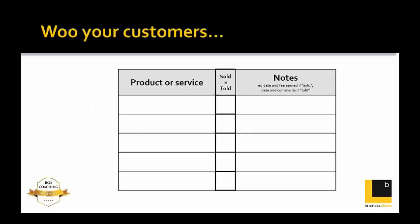An example of a system is a simple checklist — one sheet per customer listing the top five products you think they might be interested in, with notes. Your salesperson or business owner keeps that sheet in the client file. Whenever they're in touch — ringing or visiting — they pull it out and check whether they need to tell the customer about product A again, or move on to product B. Keep it moving; it doesn't need a lot of time, but it does need persistence. That's WOO — Windows of Opportunity.